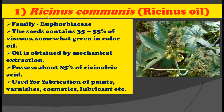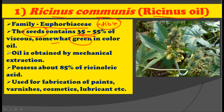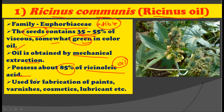The first plant is Ricinus communis, famously called castor oil plant. There are lots of plants which produce oil — some produce edible oils while others do not. Ricinus communis is commonly used for industrial purposes and not for kitchen purposes. This plant belongs to the Euphorbiaceae family, and the seeds contain 35 to 55% of viscous, somewhat green-colored oil. This oil is obtained by mechanical extraction and possesses about 85% of ricinoleic acid.